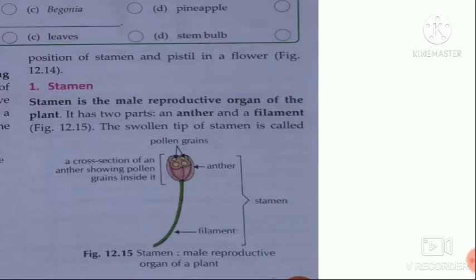The anther produces pollen grains. Pollen grains are called male gametes. Pollen grains appear as a yellow powdery substance.